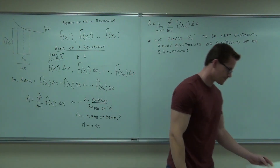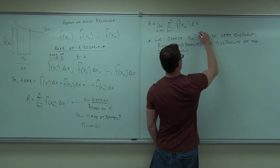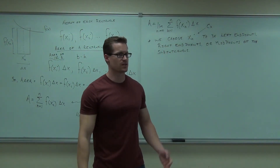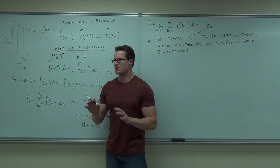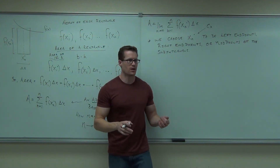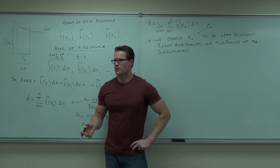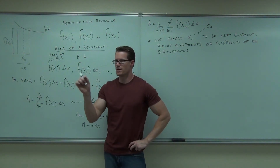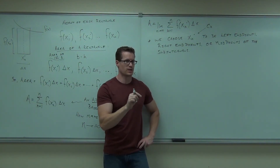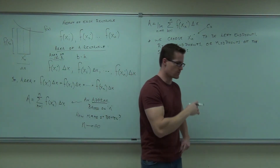By the way, your book has a tendency to call this x sub k dot as c sub k as well. So if you see c sub k, we're talking about the same thing. I prefer x sub k dot — I think it looks better because you have it in terms of x. The book uses c sub k, so whenever you're reading c sub k, I mean x sub k dot — the arbitrary point, either left, mid, or right endpoints.